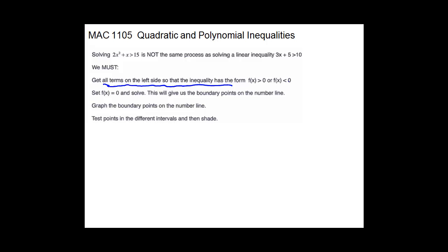Our second step is we're going to find the boundary points — these are also called critical values in some books. You're going to mark those on the number line. What you want to find out is when this equals 0, so you will set it equal to 0 and find those points, mark them on a number line, and then you have to test points in the different intervals and shade the correct ones.